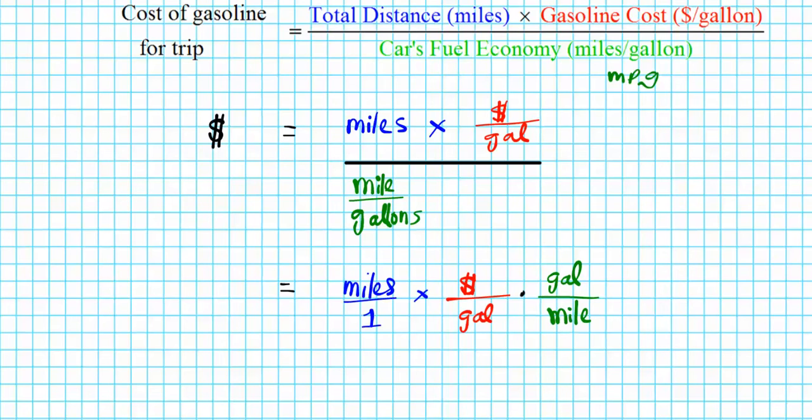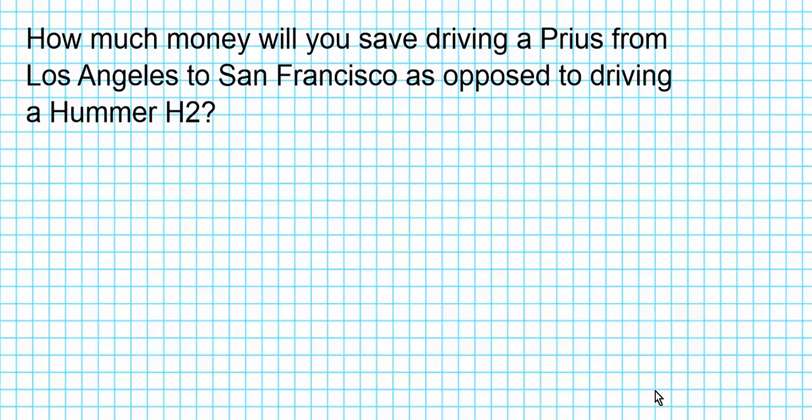If you look closely, what you see is some cancellation action going on in this equation. The miles and the miles cancel out, the gallon and the gallon cancel out, and you end up with dollars on the right and dollars on the left. So what does this tell you? The dimension of this equation is correct. Now let's go ahead and apply this formula to an actual scenario.